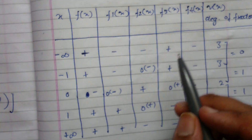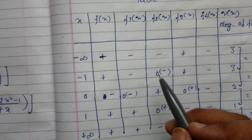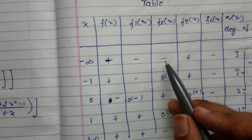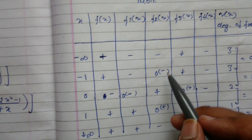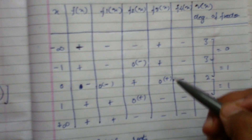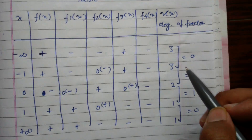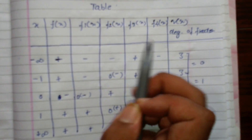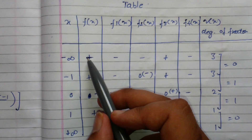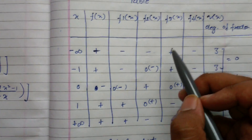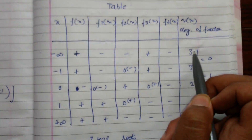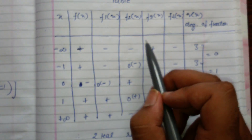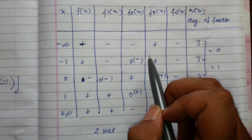We fill the entire table with signs. If we get zero at a point — for example, f2(x) = 0 at x = -1 — we assign it the sign of the previous nonzero value. Now to find V(x), the number of sign changes: at minus infinity the signs go positive, negative, negative, positive, negative — that is three sign changes, so V = 3. Similarly at x = -1 we also count three sign changes.